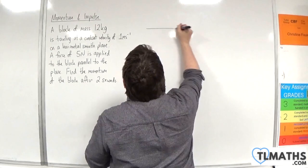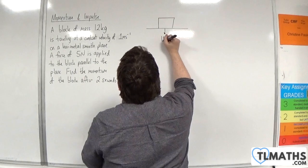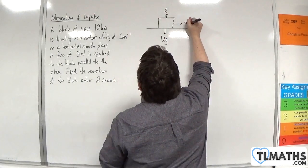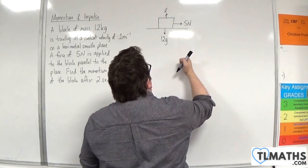So we have our block on a smooth surface, it's got a mass of 12 kilos so a weight of 12g, normal reaction force and a 5 newton force is applied to it. Now it's smooth so there's no resistance forces.